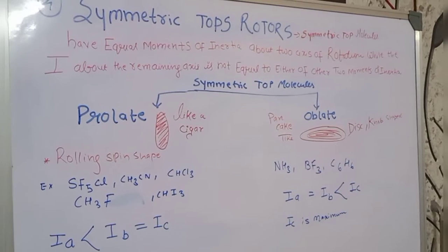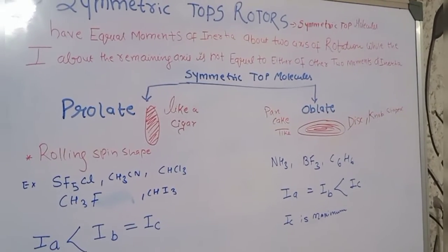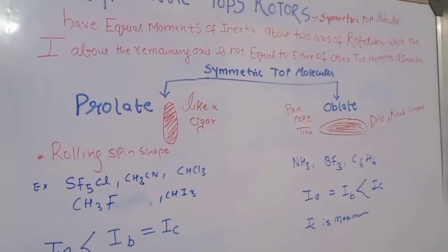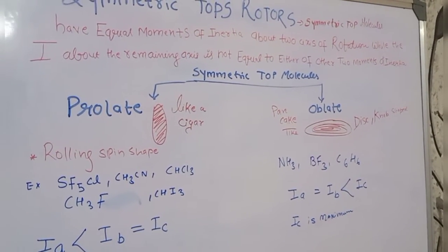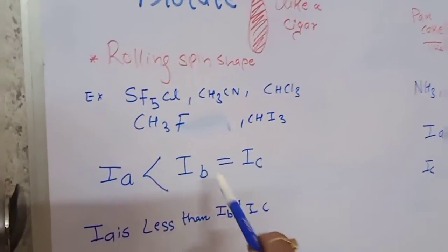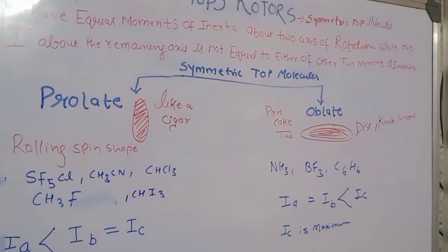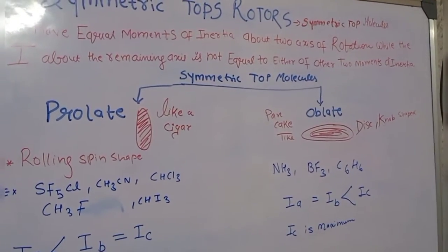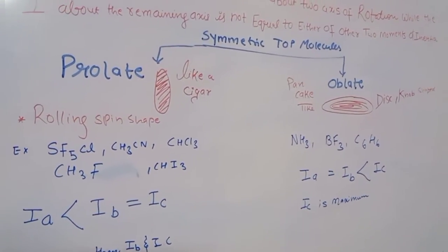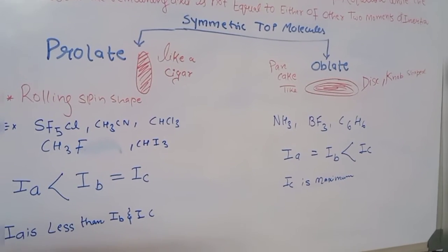The fourth category is symmetric top molecules. These have equal moments of inertia about two axes of rotation, while the moment of inertia about the remaining third axis is different from the other two. Symmetric top molecules are further classified into two sub-categories: prolate symmetric tops and oblate symmetric tops.